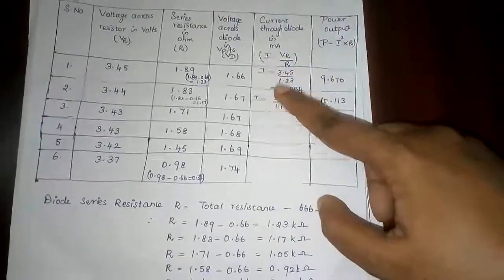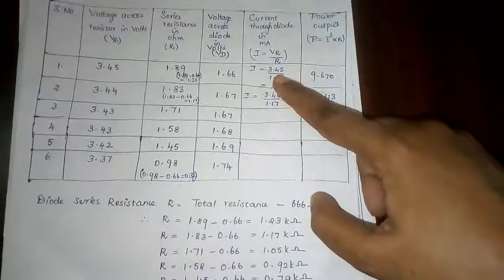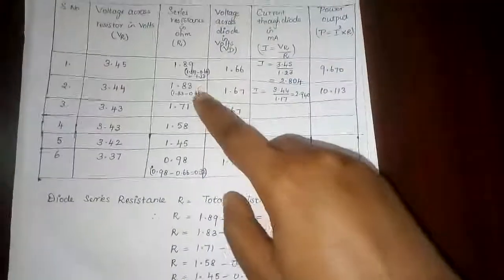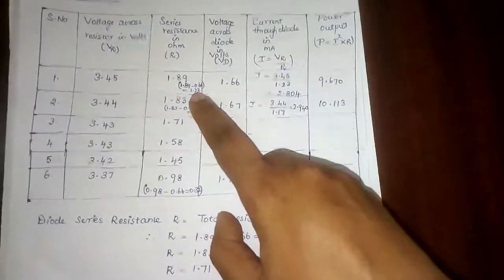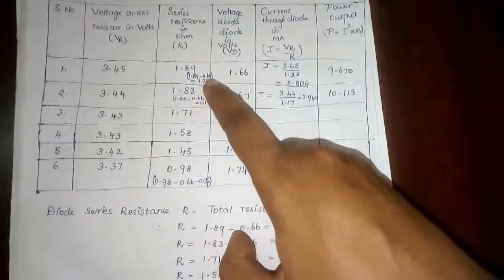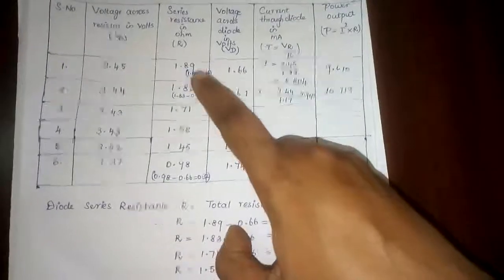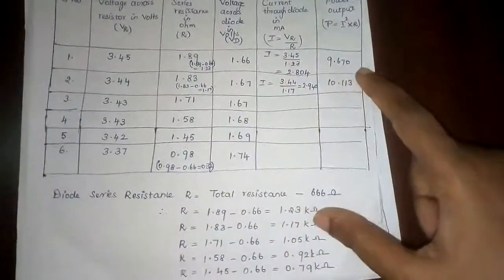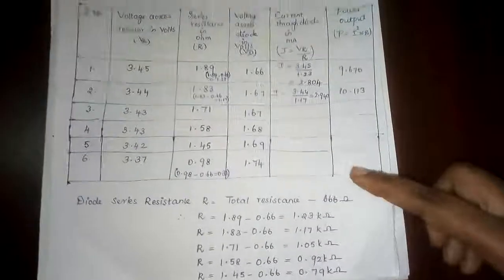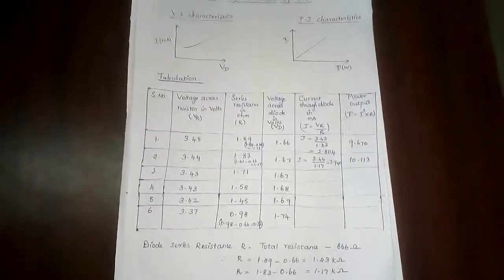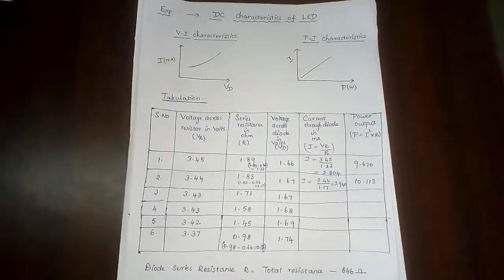We use the R value of 1.23 for all four readings. From those four values, we calculate and find the answers. So the LED DC characteristics values are complete. Thank you.